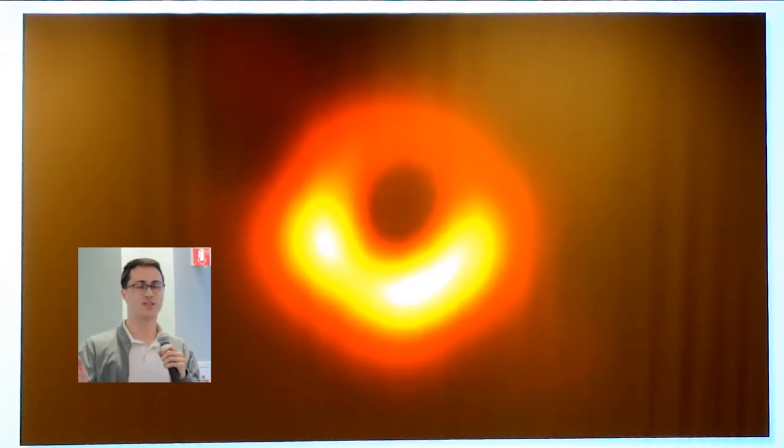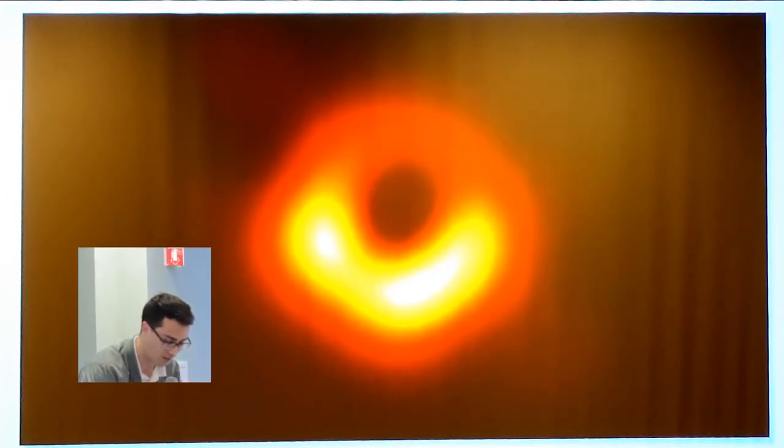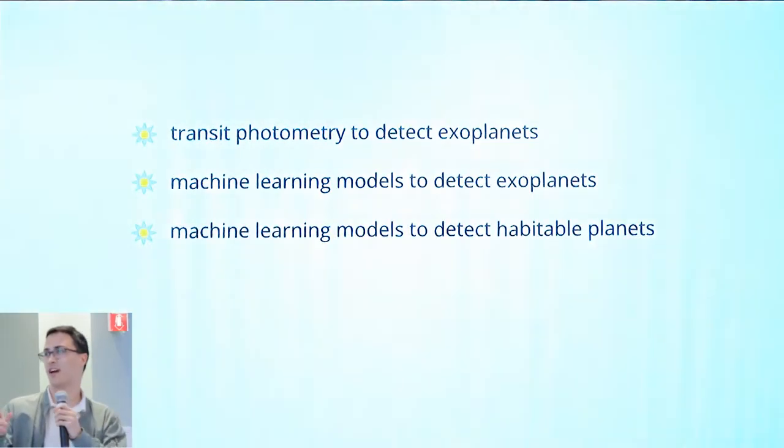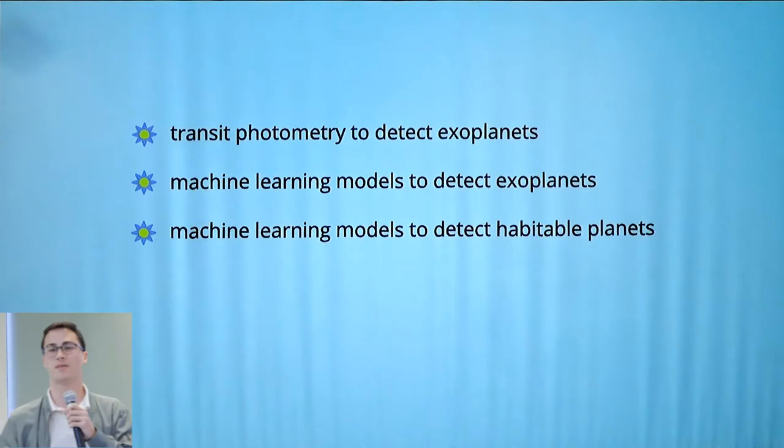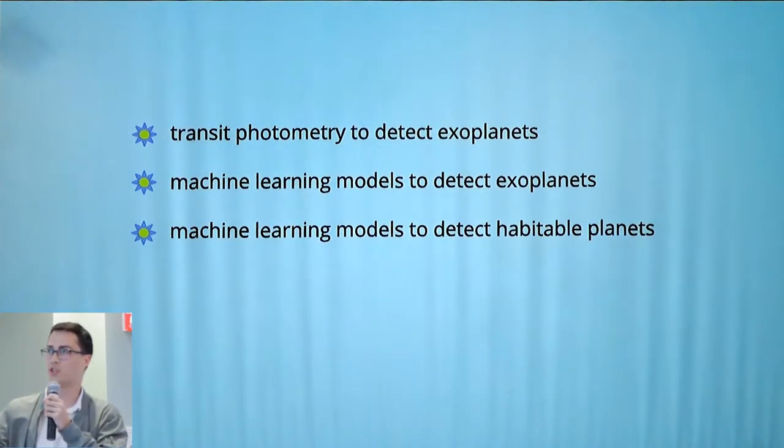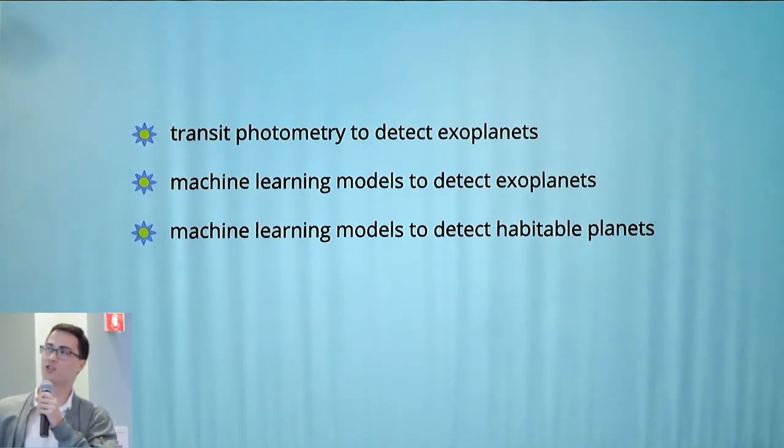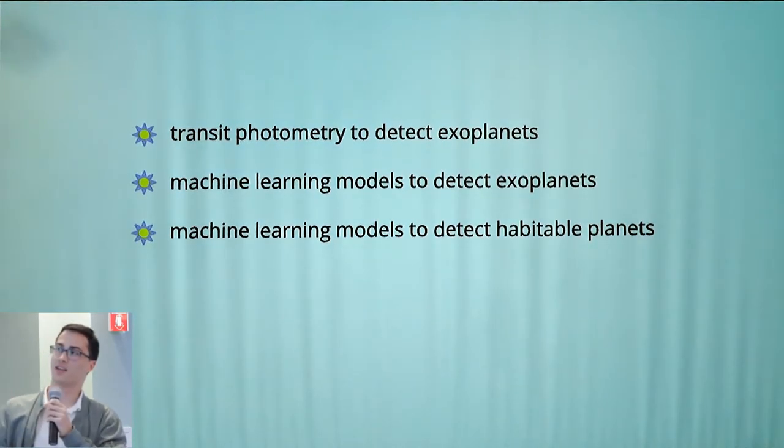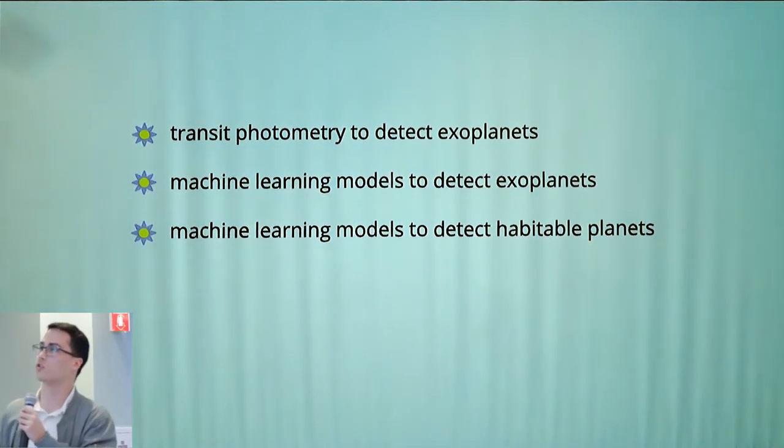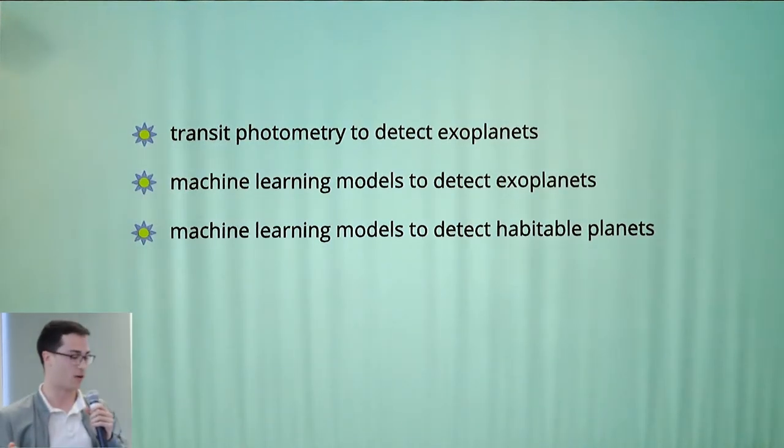I'm very interested in space, interested in Python, wanted to merge those together. If you didn't know, space is very large though, so I had to narrow down my interests into three overarching objectives: the first being transit photometry to detect exoplanets, the second and third being machine learning to detect exoplanets or habitable planets.